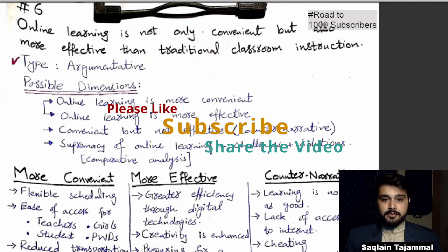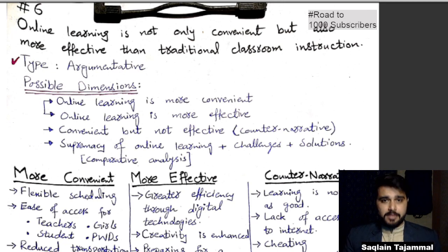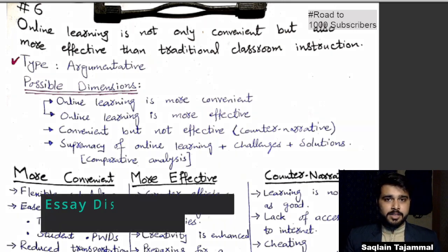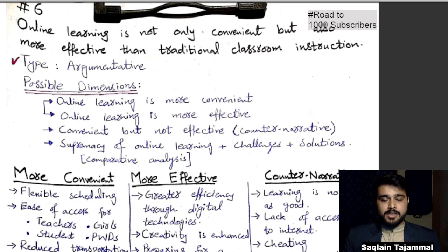The essay topic says: 'Online learning is not only convenient but also more effective than traditional classroom instruction.' You will know that CSS essays are unconventional. We have decided to do this. I recommend you go for the literary essay, but this is not a literary essay — let us be very clear.